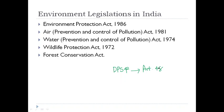In this module, we will be learning about different environmental legislations enacted in India, specifically focusing on five: the Environment Protection Act 1986, the Air Prevention and Control of Pollution Act 1981, the Water Prevention and Control of Pollution Act 1974, the Wildlife Protection Act 1972, and the Forest Conservation Act. There are plenty of other laws existing in India, but we will focus on these five.